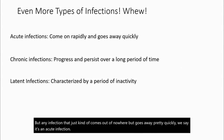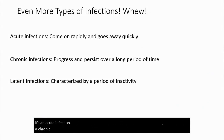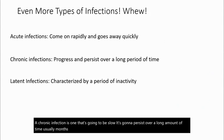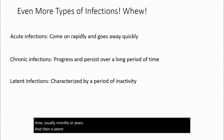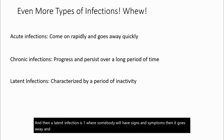A chronic infection is one that's going to be slow — it's going to persist over a long amount of time, usually months or years. A latent infection is one where somebody will have signs and symptoms, then it goes away, and then it comes back, and then it clears up, and then it comes back.